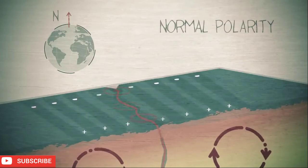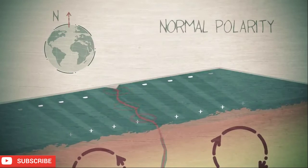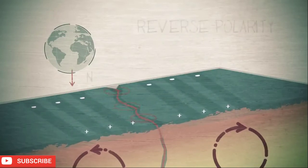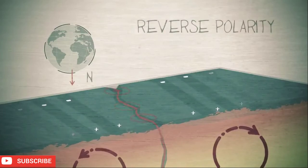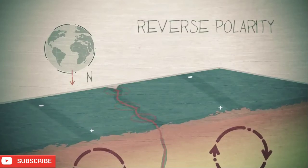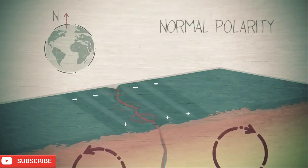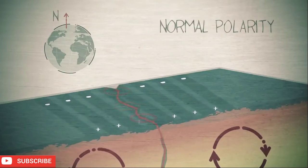Magma solidifies locking in the magnetism. New magma forms as the plates move apart. The magnetic field reverses. More magma solidifies locking in the reversed polarity and so on creating a pattern that repeats each side of the ridge with the rocks getting older the further you are from the ridge. Clear evidence of the ocean moving apart over millions of years.